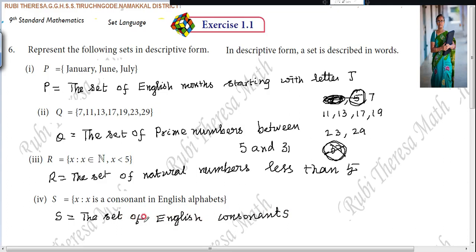I told you, while you are writing in descriptive form, it is in plural. While you are writing in set builder form, it should be in singular. Descriptive form is plural. Set builder form is singular. Right? Just make a note of it.